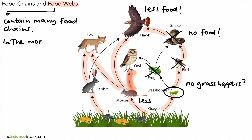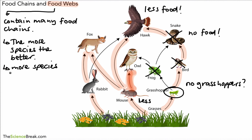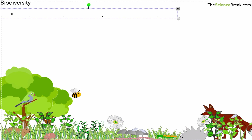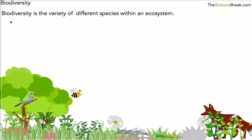Something important to remember is that the more species we have in an environment, the better. The more species we have means more biodiversity. Biodiversity is the variety of different species within an ecosystem.